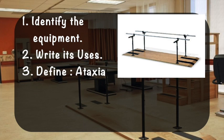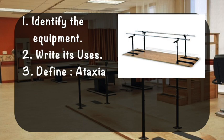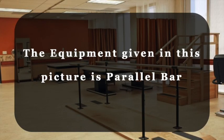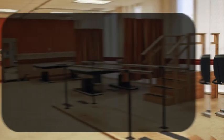Here are the questions: identify the equipment, write down its uses, and define ataxia. The equipment given in this picture is parallel bars. Parallel bars are used for ambulation exercises to improve the patient's ability to walk either independently or with assistance.